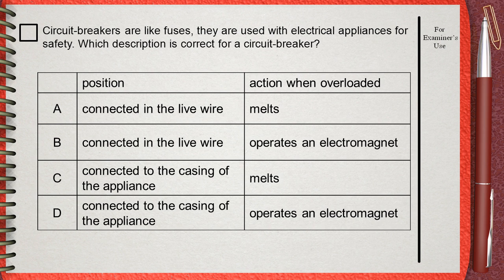There are 4 choices about the position and their action when overloaded. Choice A: a circuit breaker is connected in the live wire and melts when it's overloaded. Choice B: connected in the live wire and when overloaded it operates as an electromagnet.